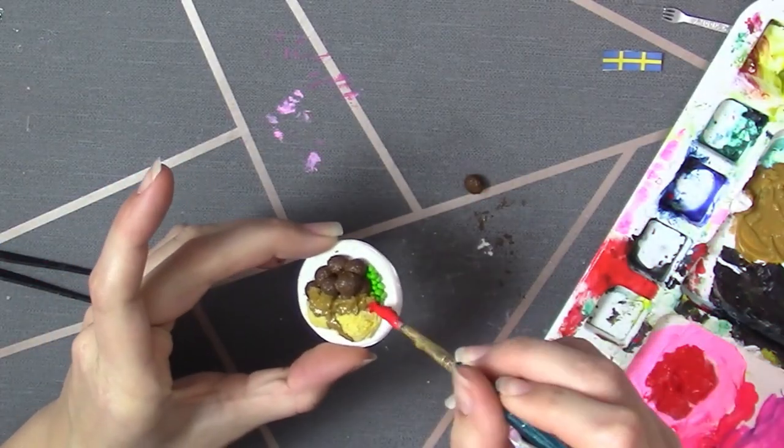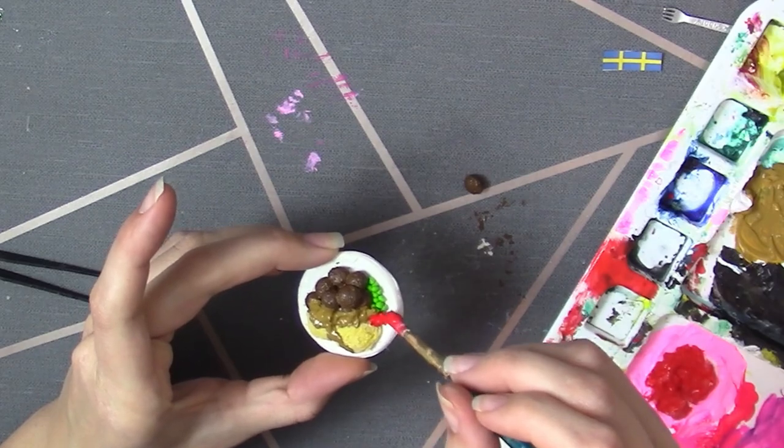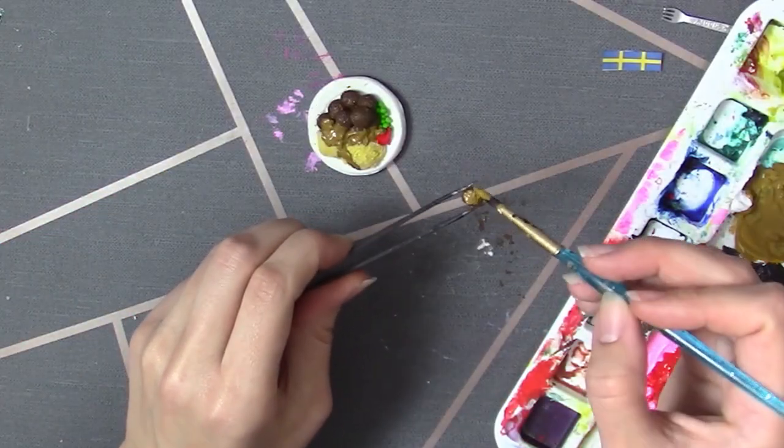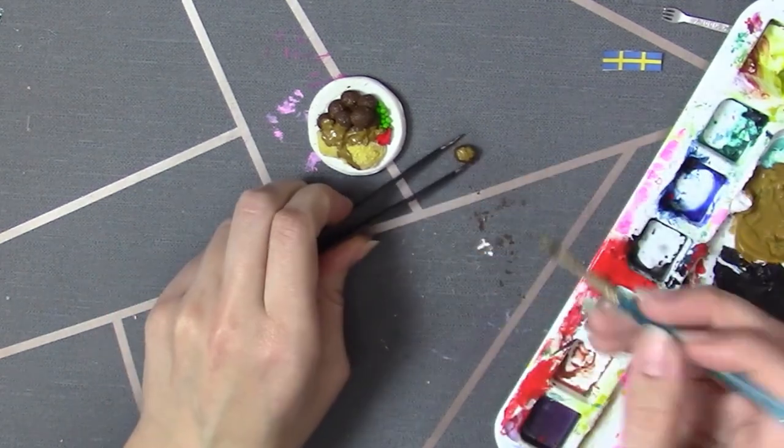I then also did the same with some red paint and some glue again to make that lingonberry sauce. I also added some gravy onto the other meatball that's going to go onto the fork.